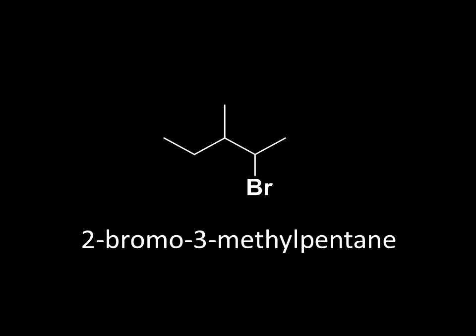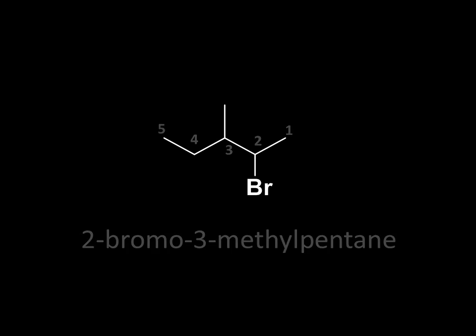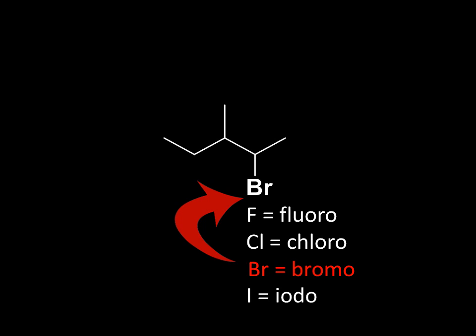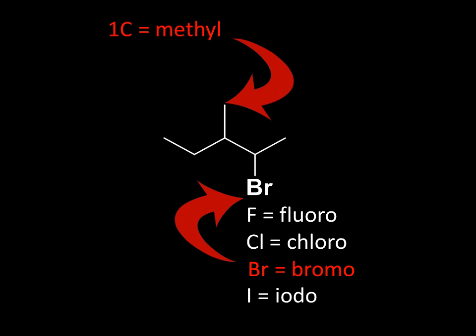Even when we draw it the other way around, we start numbering from the end that keeps the numbers as small as possible. So this is still 2-bromo-3-methyl pentane, just drawn from a different orientation. Of course, it won't always be a bromine and a methyl group. We might also have a different halogen — fluorine, chlorine, or iodine — identified using their respective descriptors. Likewise, a branch may have more carbons: ethyl, propyl, butyl groups, and so forth.